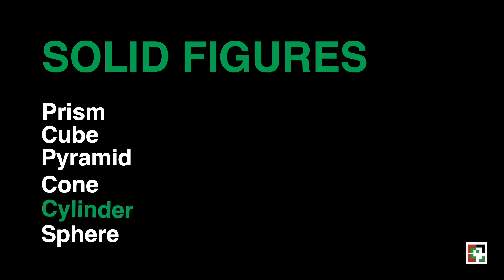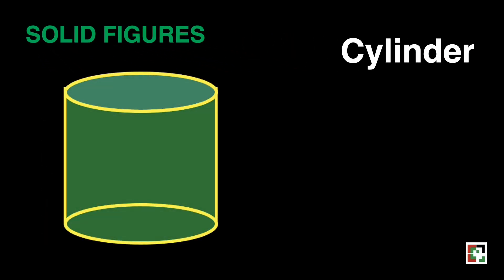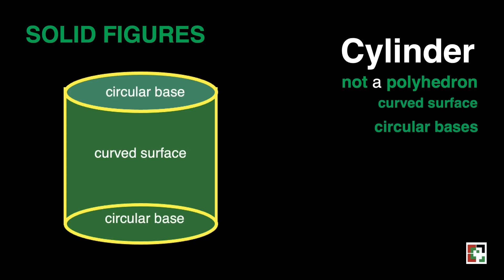The next one is cylinder. This is an example of a cylinder. It is also not a polyhedron because it has curved surface. And a cylinder has two congruent or equal circular bases that are parallel.